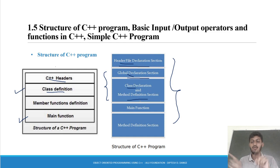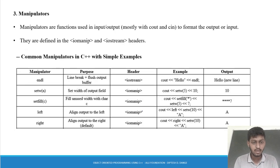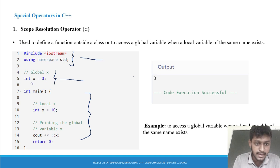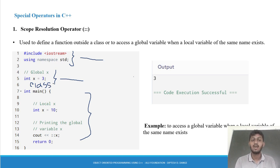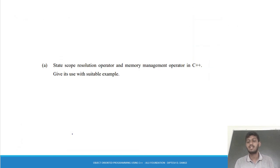The main function is written as int main with curly braces — that is the main function. Then whatever methods there are, we define them. Functions that are there can also be defined after main. So this is your header files, this is your global section, this is your class definition section, method definition section, and this is your main function.